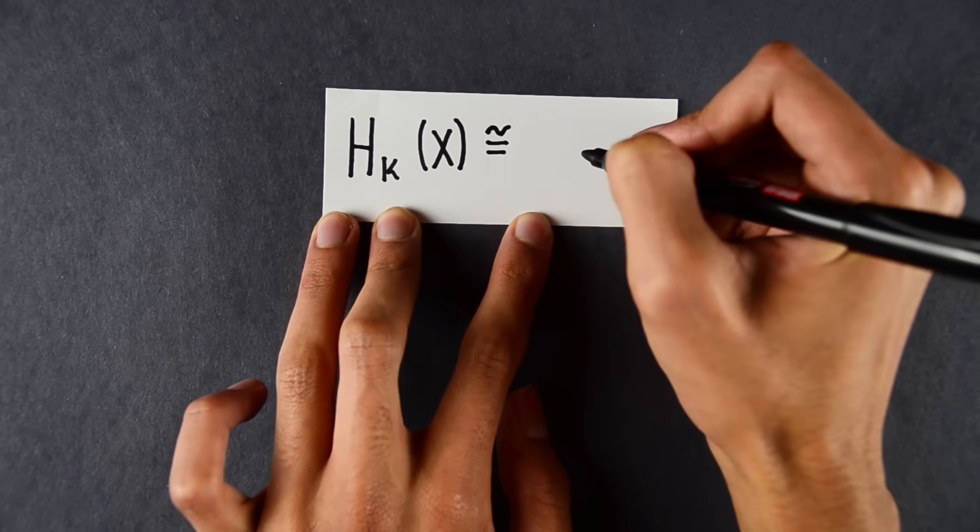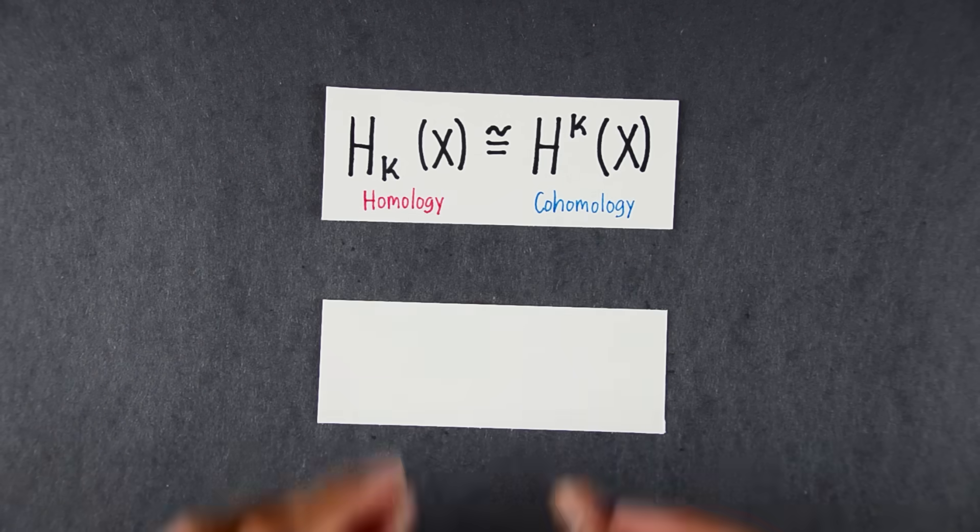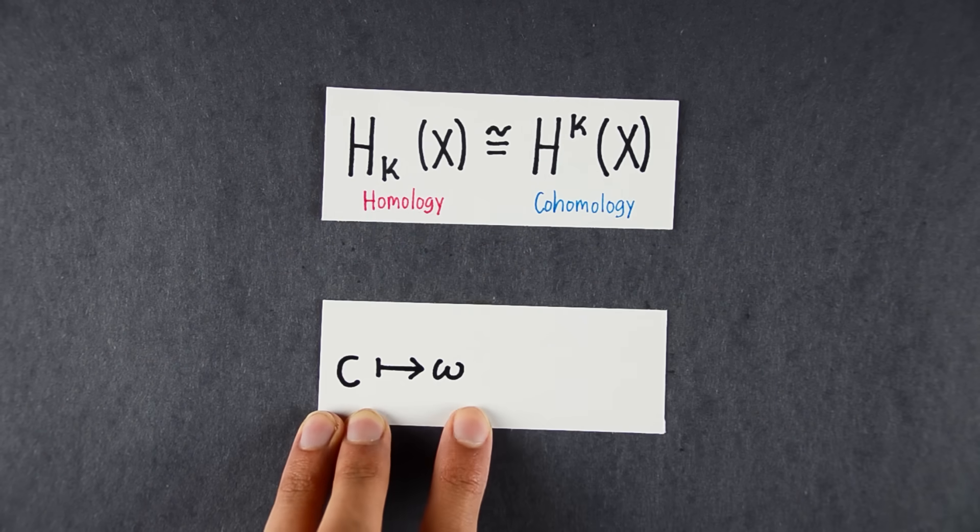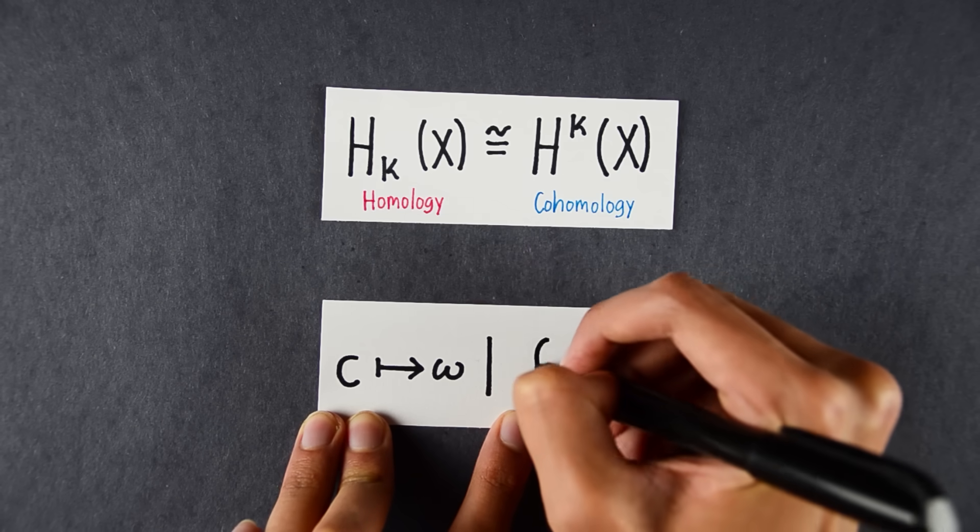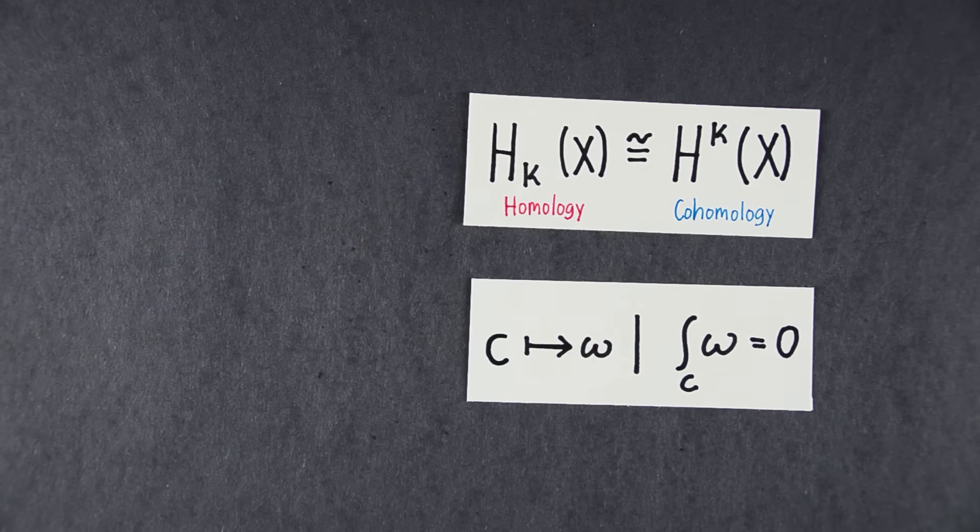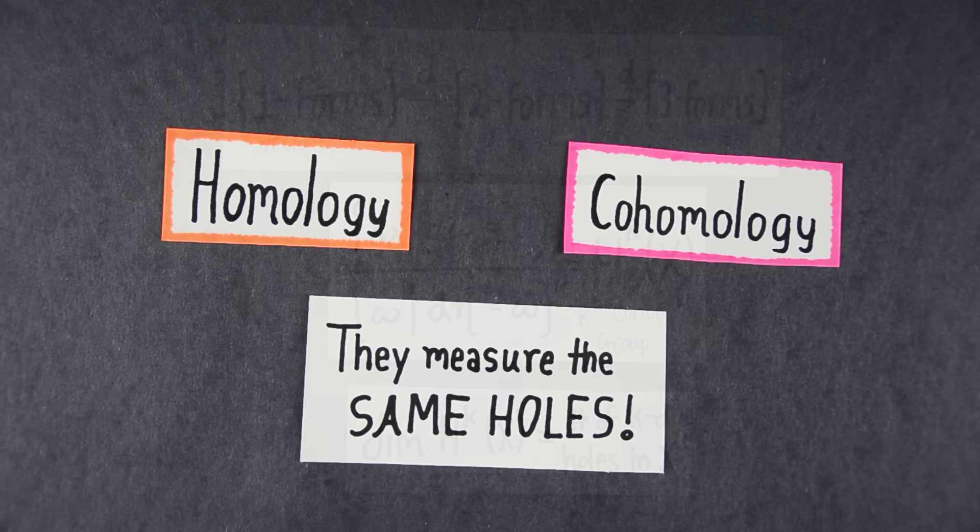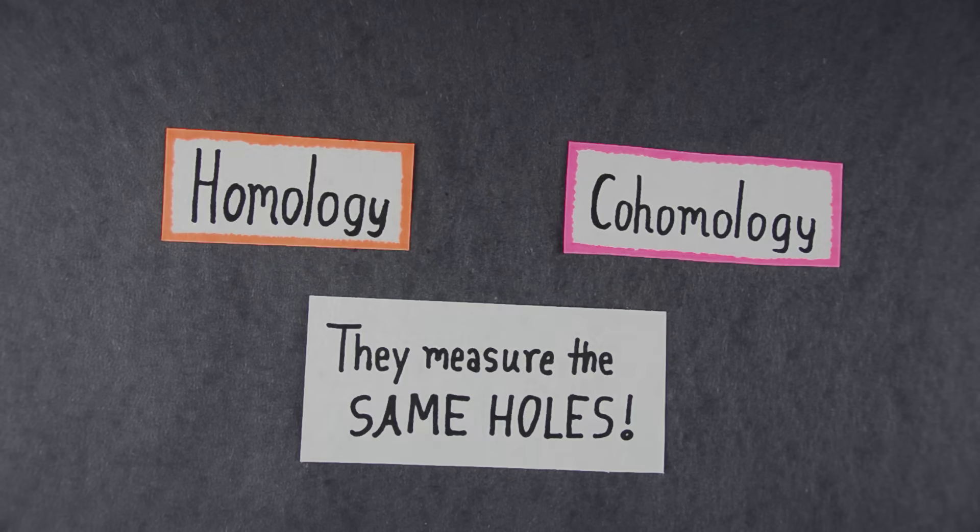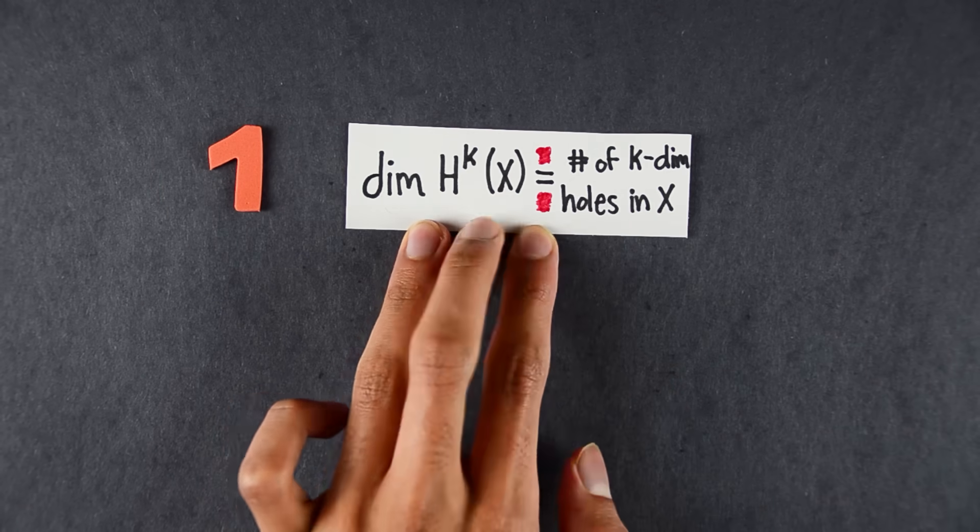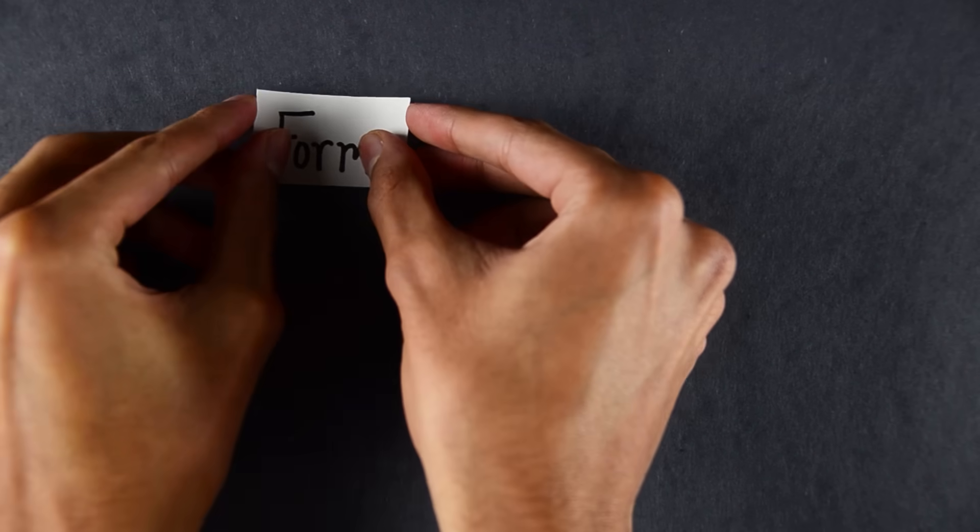This theorem says the k-th homology group and the k-th cohomology group are isomorphic, and the isomorphism is given by the integral. Send a k-chain c to the unique k-form omega, such that the integral of omega over c is zero. When I first saw this, I didn't know what to make of it. I could sense that it was profound, but it was so abstract that I couldn't really see the point. So we should pause to think about the consequences. First, this shows that the dimension of the cohomology group equals the number of k-dimensional holes in our space. But there's something deeper going on here.